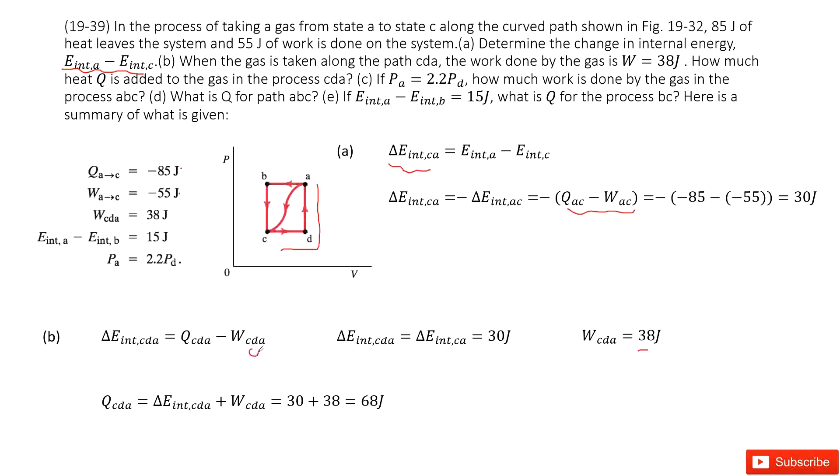So we can say internal energy change for CDA equals Q_CDA minus W_CDA. This part is given, and this part we need to know. Can you find this part? Yes, we can see CDA just equals the internal energy change C to A, right? So this part is given in part A, therefore we can get Q_CDA in this equation.